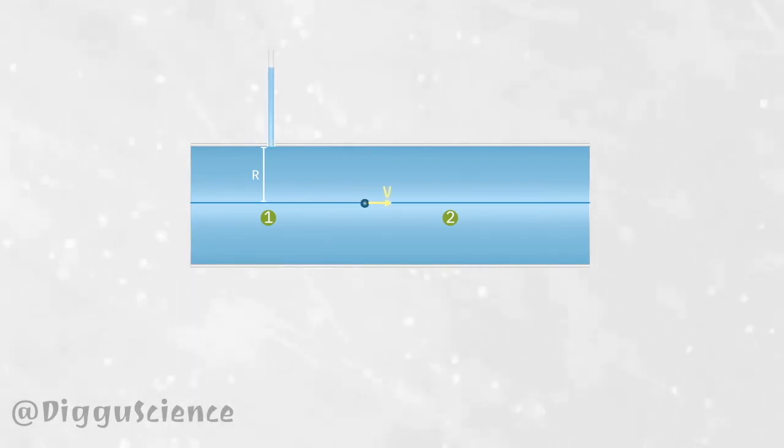Now the fluid starts flowing due to external pressure exerted on one side. At the same time, the small pipe began to fill with water. Let's assume the height is h1. Now the reading of the piezometer is rho g h1.